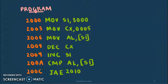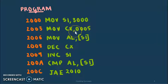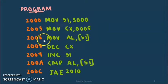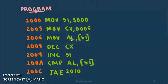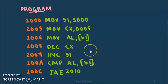The first statement will point the SI register to location 3000 where we will have the numbers. This is a 3-byte instruction so the next line of code is at 2003, where we will store the value 5 to register CX since we are using 5 numbers. Note that we assume all numbers entered are unique with no duplicates — that is the condition for this program to work properly. This is a 3-byte instruction so the next line of code is at 2006, where we will move the content pointed by SI to register AL. This is a 2-byte instruction so the next line of code is at 2008, where we decrement CX by 1 because we have already moved one value to AL. This is a 1-byte instruction so the next line of code is at 2009, where we increment SI to access the next number.